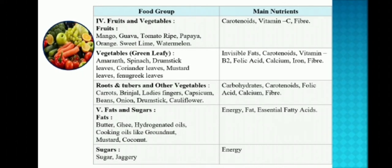Coming to the vegetables — green leafy: amaranth, spinach, drumstick leaves, coriander leaves, mustard leaves, fenugreek leaves. The nutrients contained are carotenoids, vitamin B2, folic acid, calcium, iron, fiber and invisible fat.